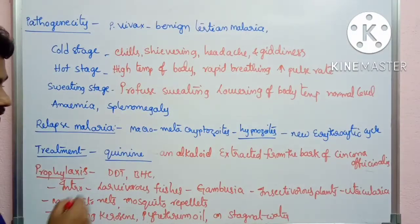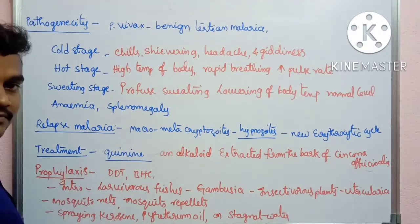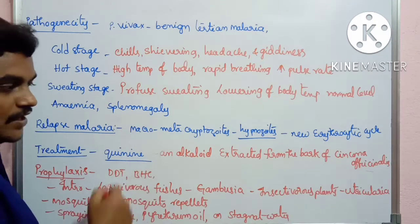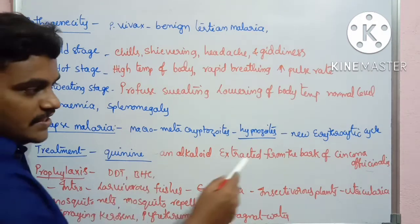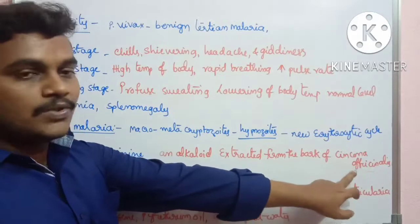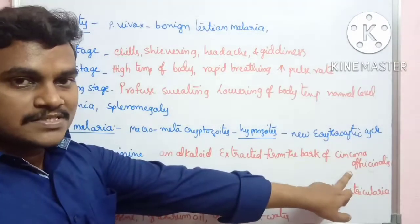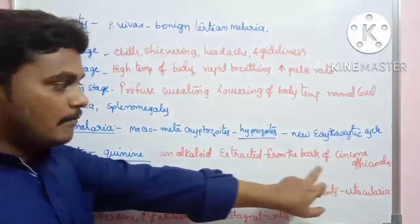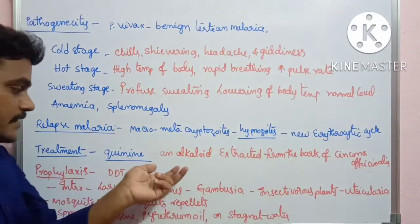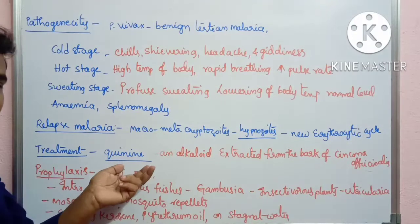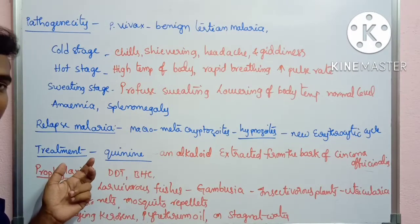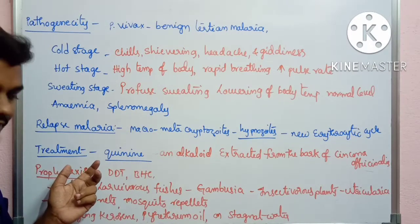For treatment, one drug used is quinine, which is an alkaloid extracted from the bark of Cinchona officinalis. Cinchona officinalis is a tree, and its bark yields quinine, which is useful for the treatment of malaria.